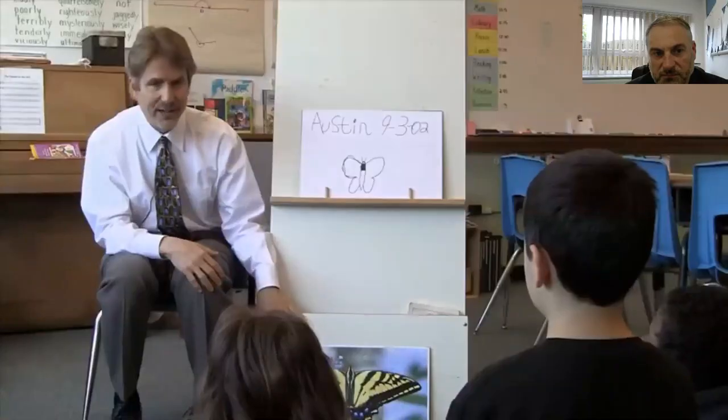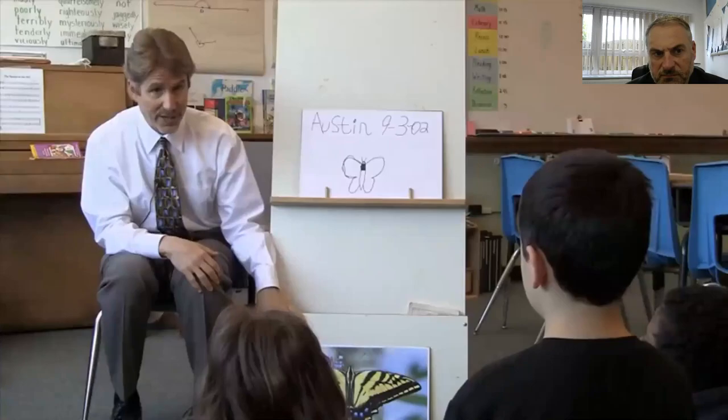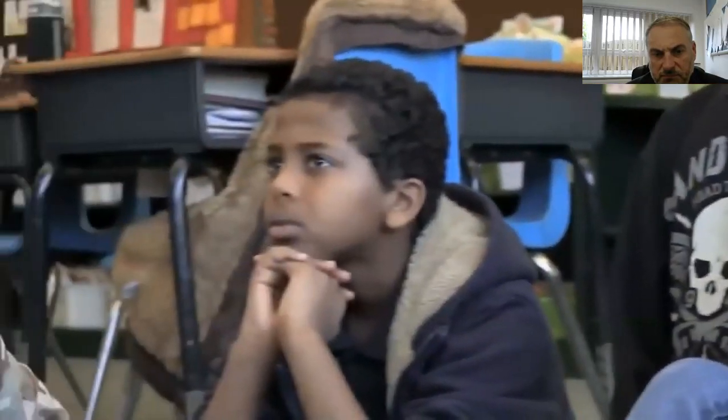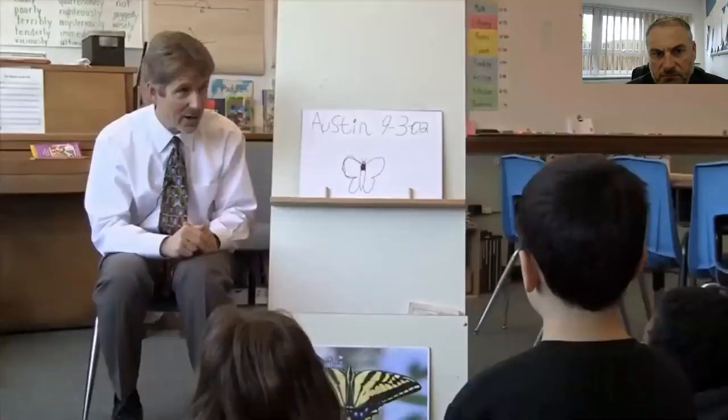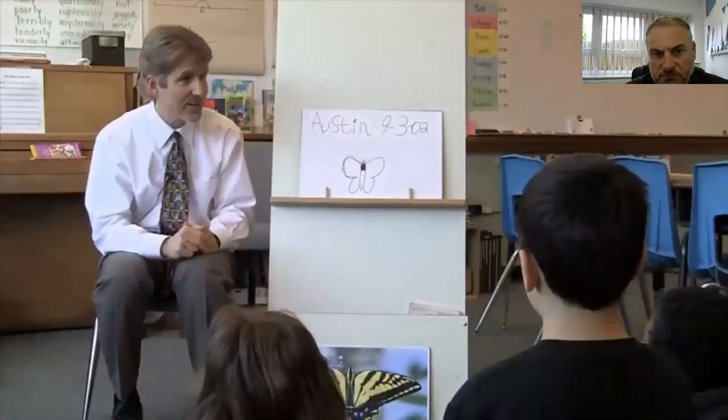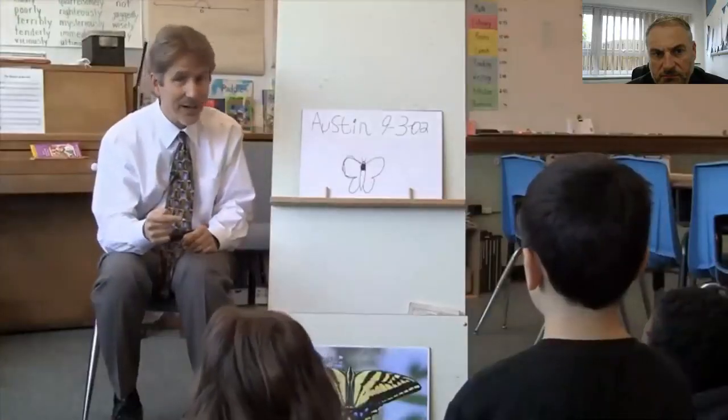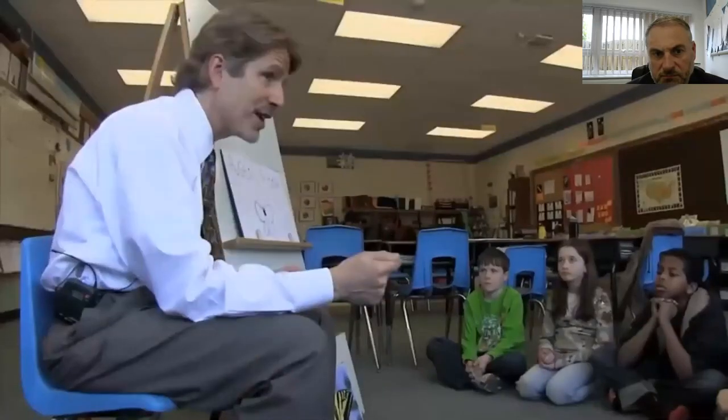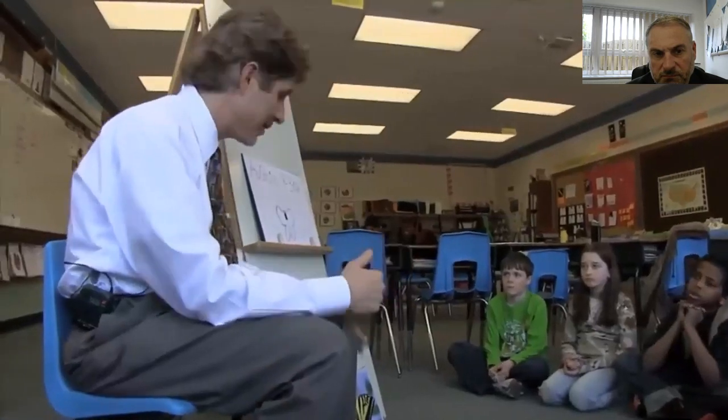Luckily, Austin's was an expeditionary learning school. They didn't look at his drawing and say 'Good, you're done.' They said, 'Austin, good start — now we can give you critiques so you can do a second draft and make it better, and a third draft and make it better, and get it much closer to the photograph.' He was ready to go. All the first graders in his critique group sat together and decided to split their advice into two kinds: first, just the shape of the wings, and then the pattern inside.